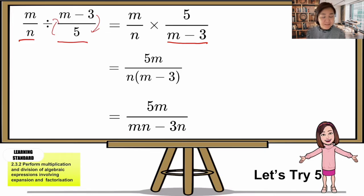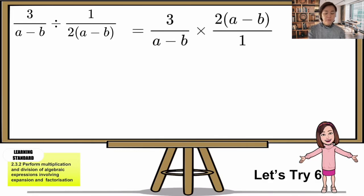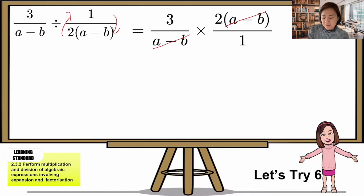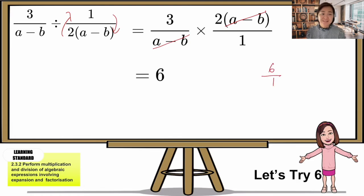Last question: no factorizations possible on either fraction. Change divide into multiply — flip the second fraction. Now we can cut (a-b) top and bottom — that's valid because (a-b)÷(a-b) equals 1. Then 3 and 2: simplify. No more common factors. Multiply numerator with numerator and denominator with denominator. The denominator equals 1, so our final answer is 6. No need to write 6 over 1 — just write 6.